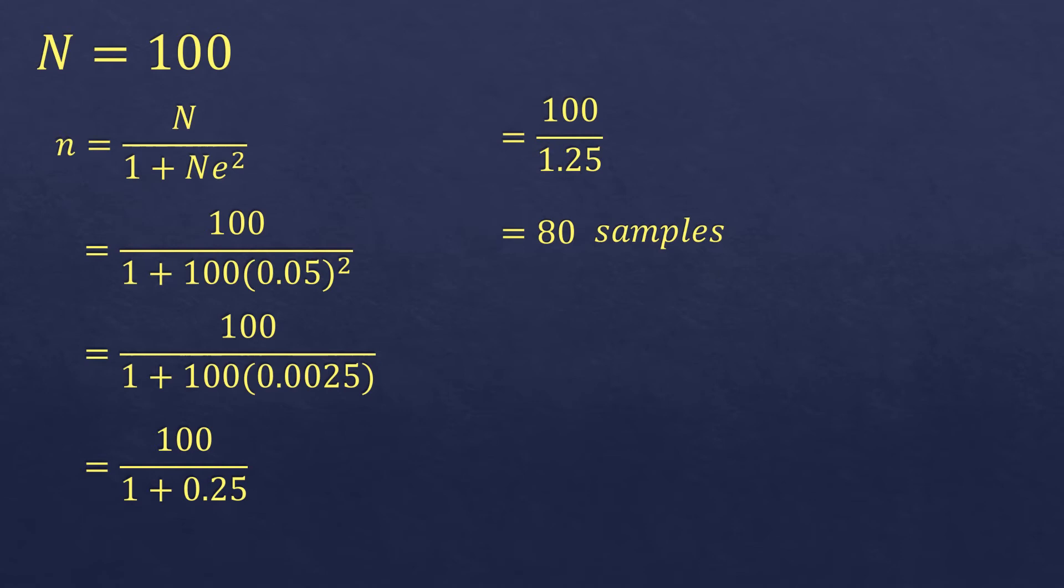Let's say 79, so it will not be valid, because according to Yamane's formula computation, your minimum number of samples must be at least 80.